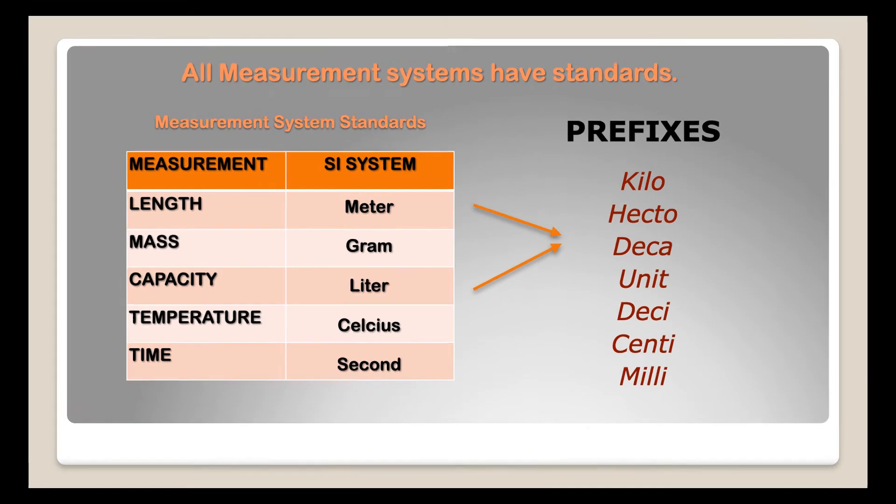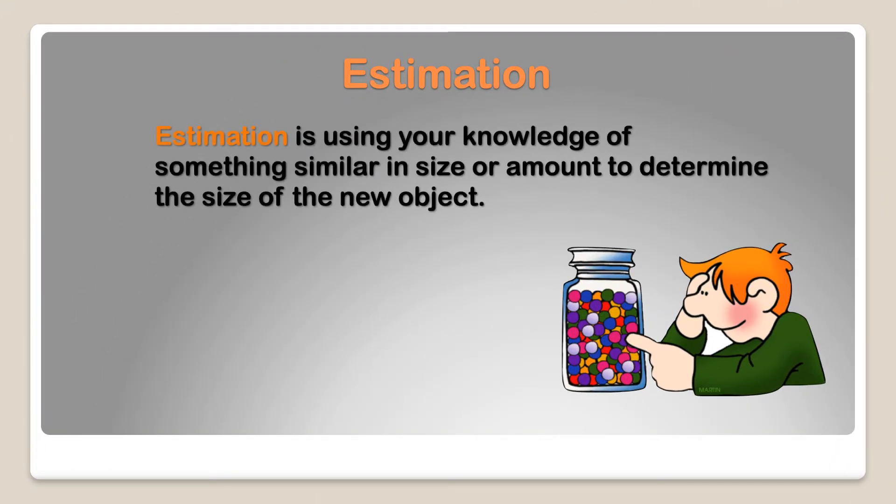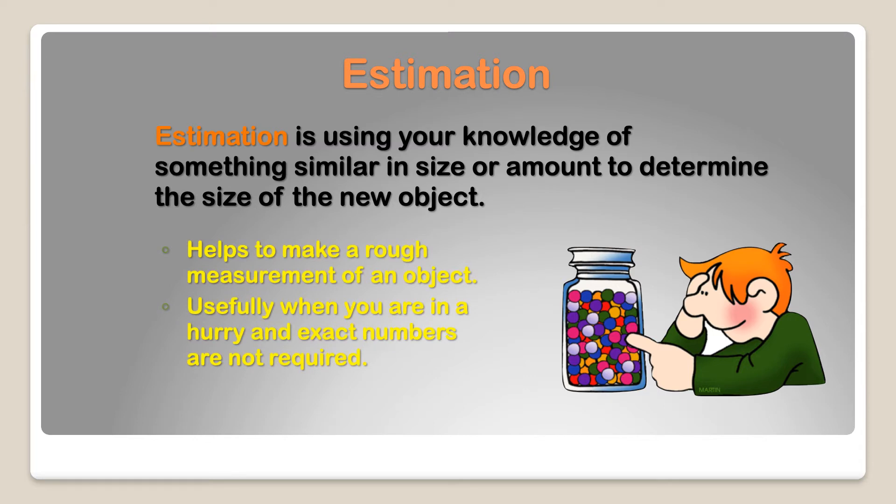But let's look at the term estimation. Estimation is using your knowledge of something similar in size or amount to determine the size of the new object. Estimation helps to make a rough measurement of an object, usefully when you are in a hurry and exact numbers are not required.